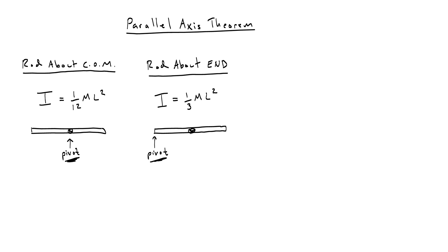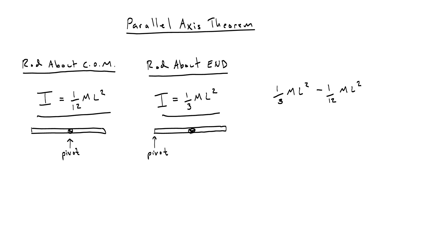We've already shown using integral calculus in another video how to derive these moments of inertia. What we're going to do now is take the moment of inertia for the rod about its end, 1/3 ml², and subtract the moment of inertia about its center of mass, 1/12 ml², to find the missing piece that explains how we go from one pivot point to another.